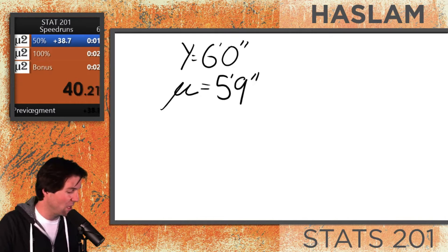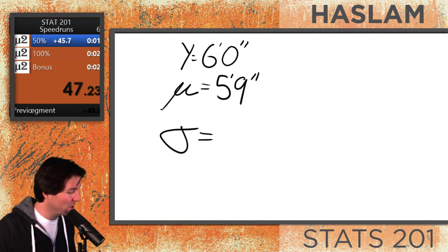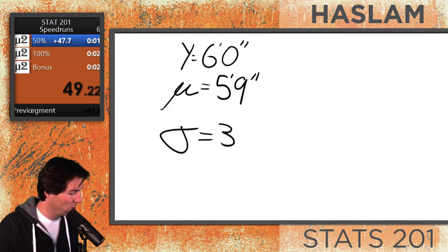Now we also need the standard deviation. The standard deviation looks like an O with a little circle at the end of it, and that is sigma. That's population standard deviation, and we're going to choose three inches.